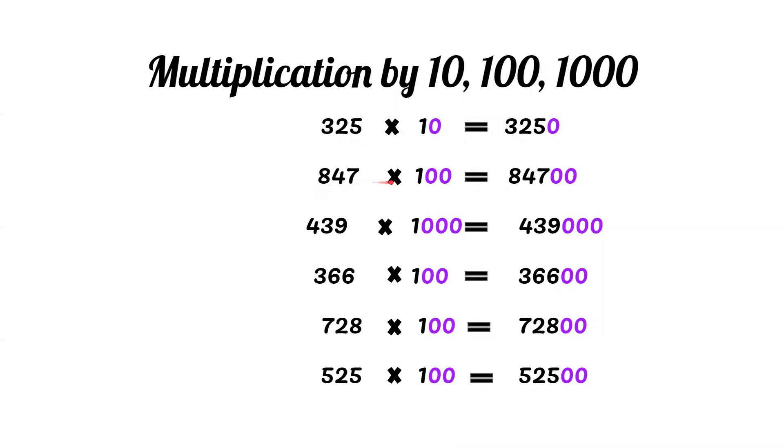847 times 100: First we write 847, and then add two zeros to the right since 100 has two zeros.